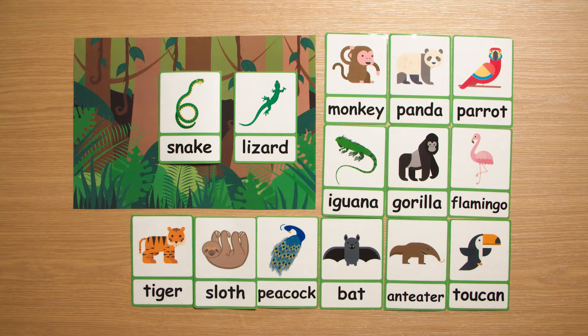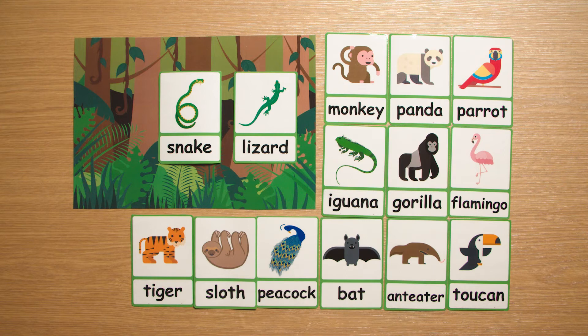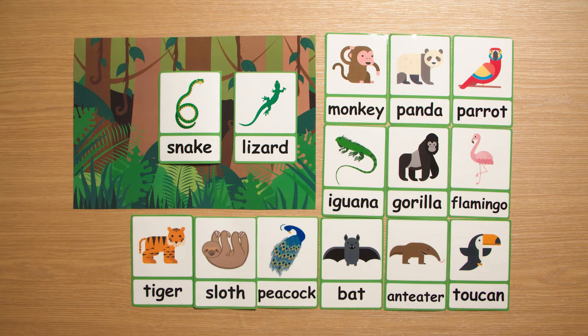Other than learning the names of the animals, why not ask facts about the animals, such as what colour is a flamingo? Or what does a snake eat? For example, you can teach food chains.